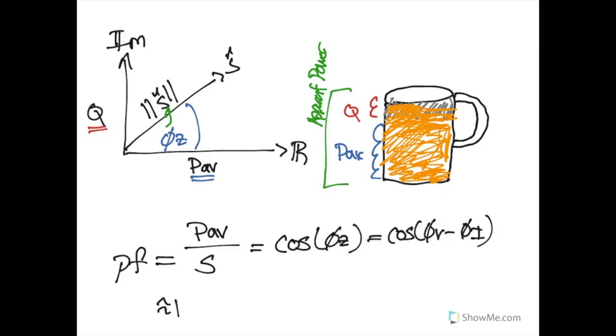Where something is a power factor of one, every bit of that beer that you paid for, every bit of that electricity that you paid for, you got. Because your real power is equal to your apparent power. That makes you happy, we'll put a happy face.